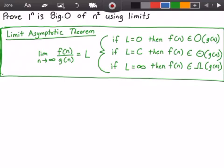And in the green rectangle here, we have our Limit Asymptotic Theorem. That states if we have a limit as n approaches infinity of a function that we call f(n) divided by another function that we're going to call g(n), and it equals some limit L,